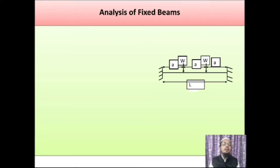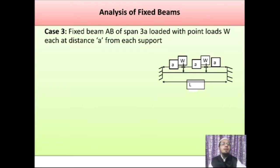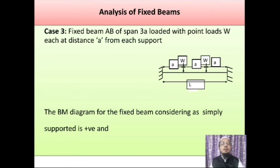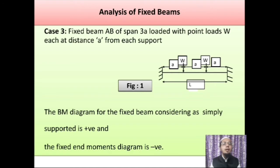Now in this session, we are going to discuss the third standard case — a fixed beam of span L subjected to concentric loading, or symmetric concentric loading, meaning point loads acting at equidistance from the supports. We consider a fixed beam of span L, where L equals three times A, or the span divided into three equal parts, subjected to point loads W of the same magnitude at a distance of A meters from both supports. The bending moment diagram considering only vertical downward loading gives a positive sagging bending moment, and the bending moment diagram considering only fixed end moments gives a negative hogging bending moment.